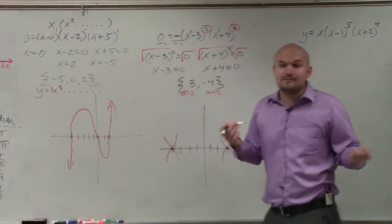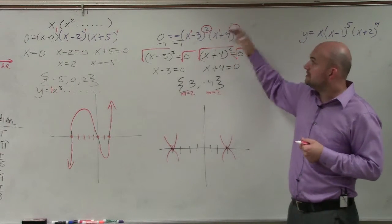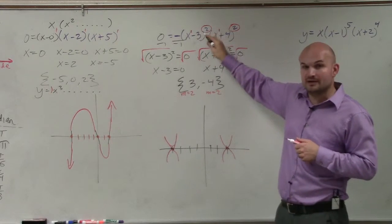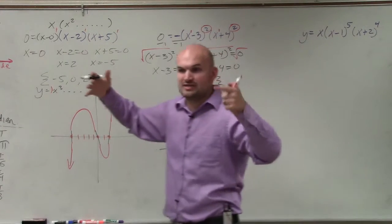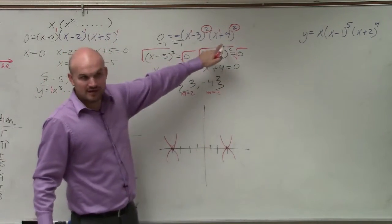So now, what I need to do is determine the end behavior. Well, this one's a little bit more difficult here. Now, let's kind of think about this. x minus 3 squared is going to multiply out to give you what leading term? x squared. And that works for this one, too, right?